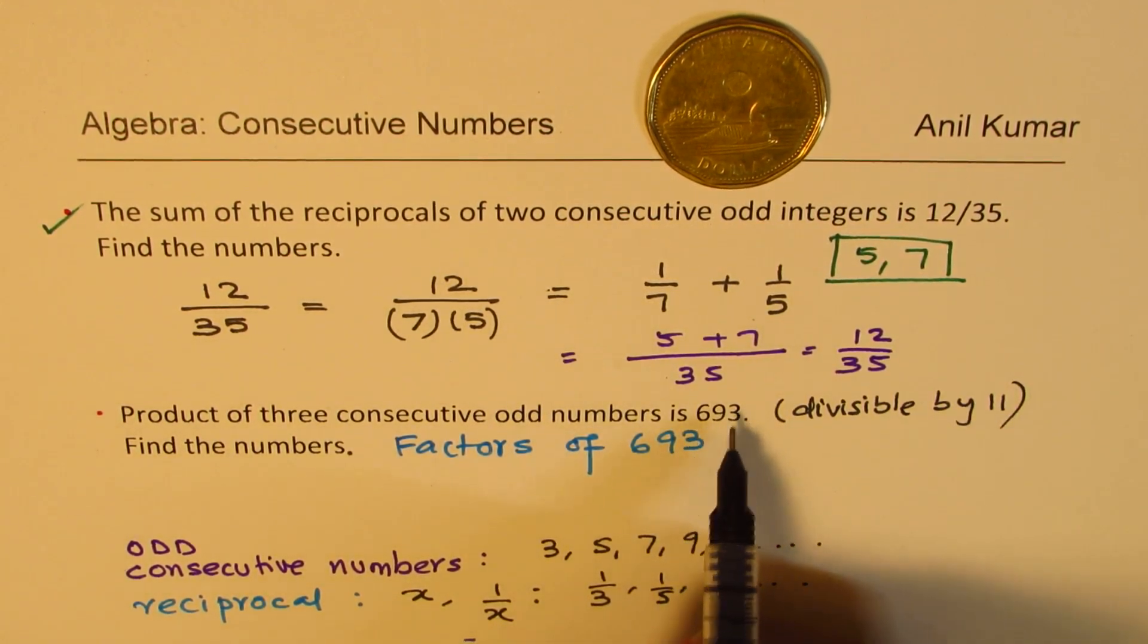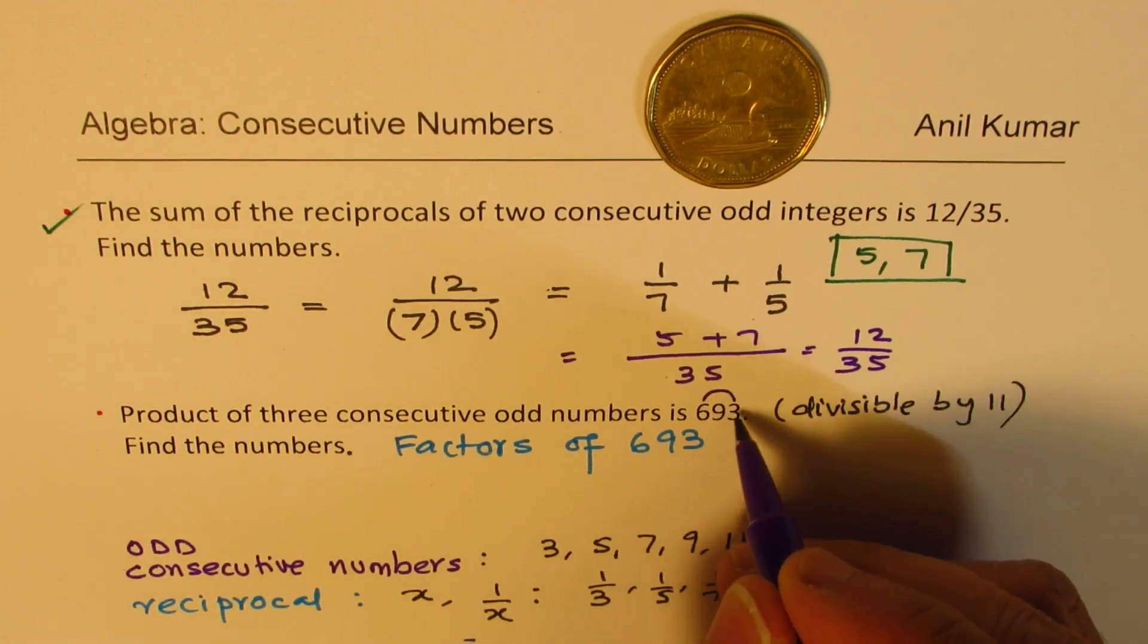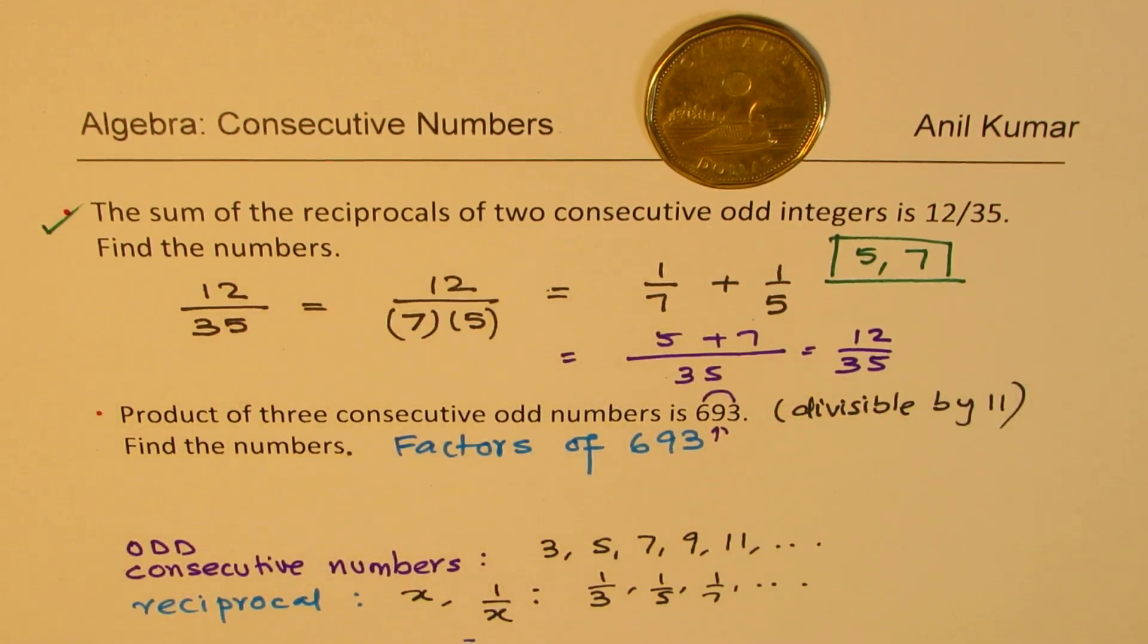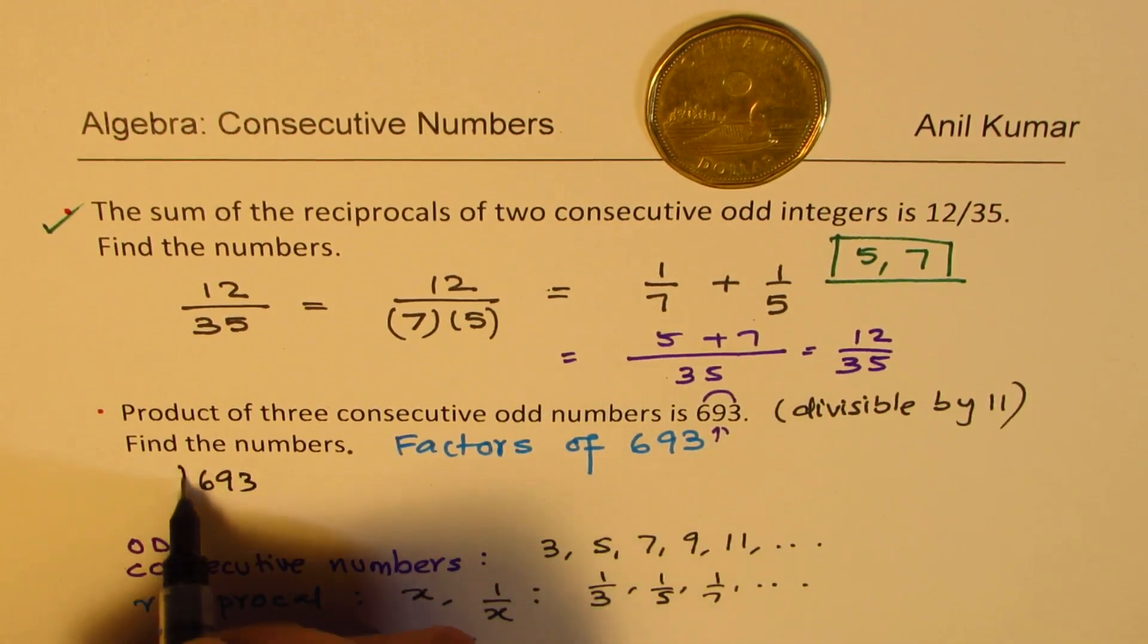So this is 6 plus 3 is 9. So that divisibility rule. So if I add 6 and 3, I get 9, which is same as the center number. So alternate digits, if you add and you get the same sum, then it is divisible by 11. So that gives us a hint that we could actually divide 693 by 11.